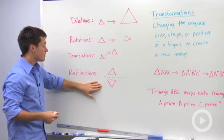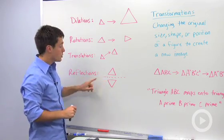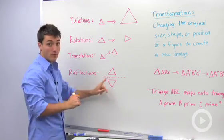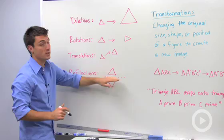And the last type of transformation is a reflection or flipping it. So with reflection, you're going to need a line that you are reflecting. Notice here I reflected this triangle over this dotted line.